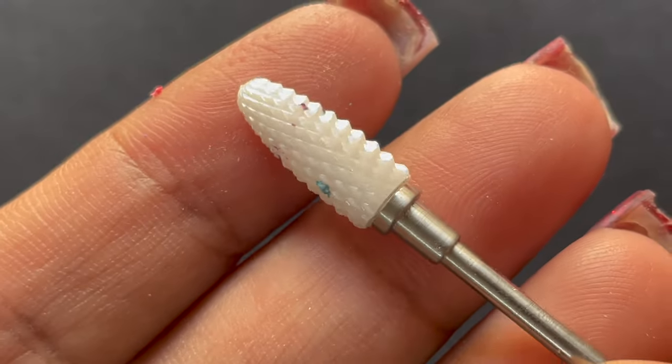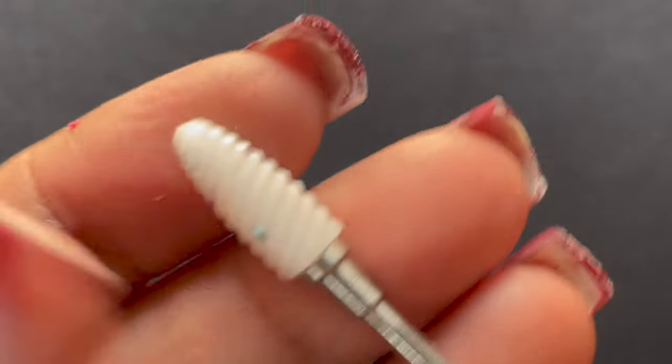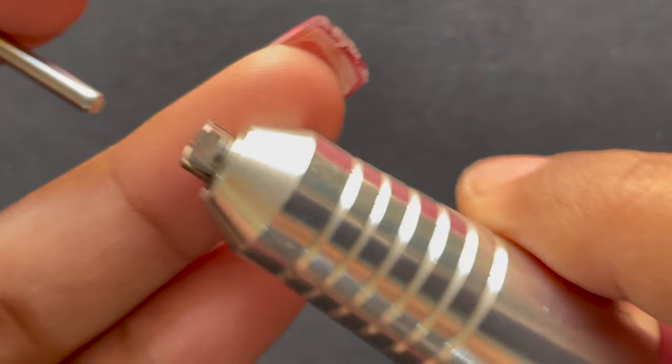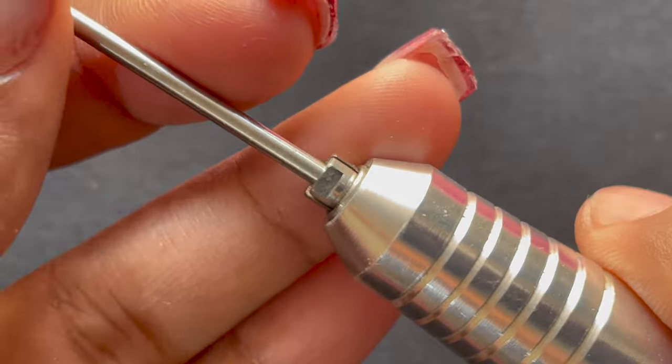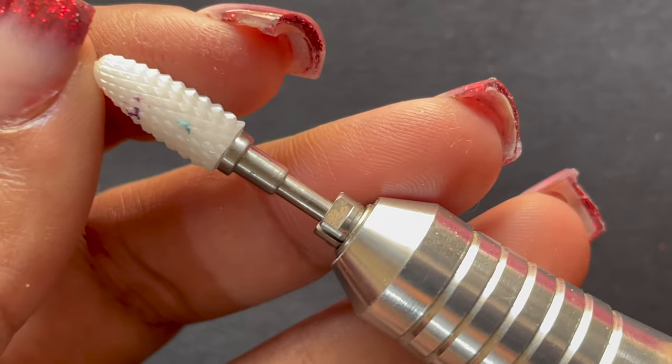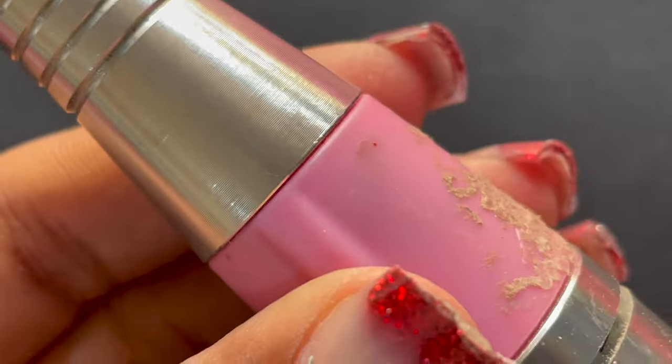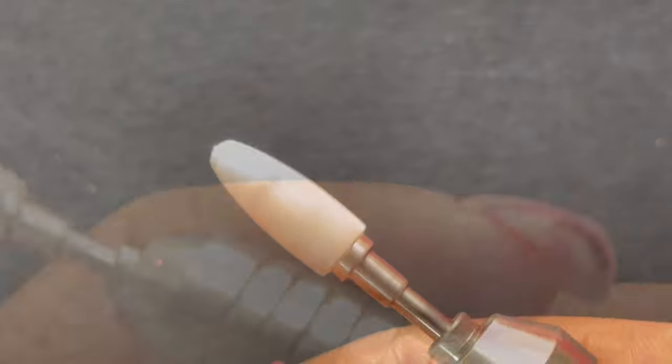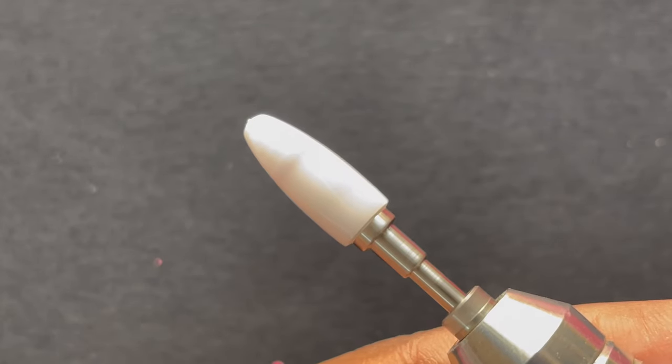After you cut short the nail length, the next step is to file off that extra product from the nail surface. If you remember from my previous videos, we know that we put extra product to create that apex. That's where we have the most amount of product on our nails, so that's what I'm going to file down.